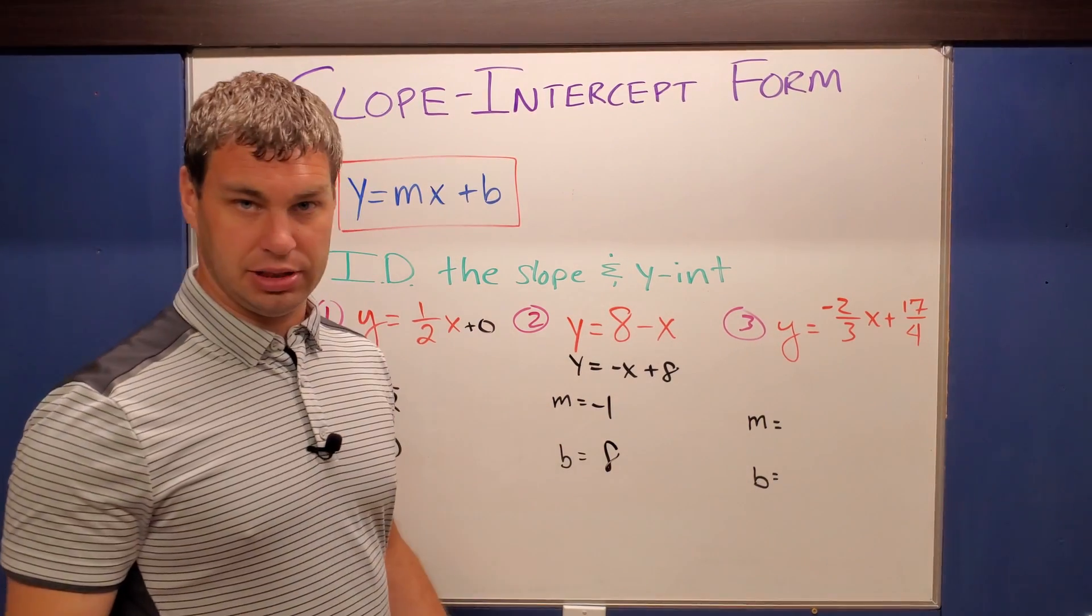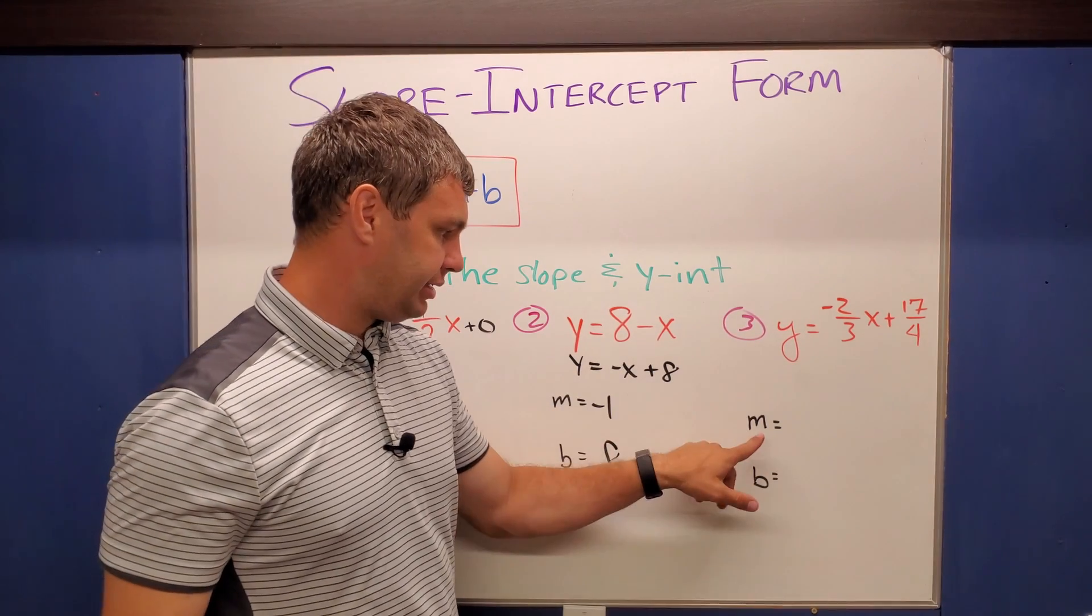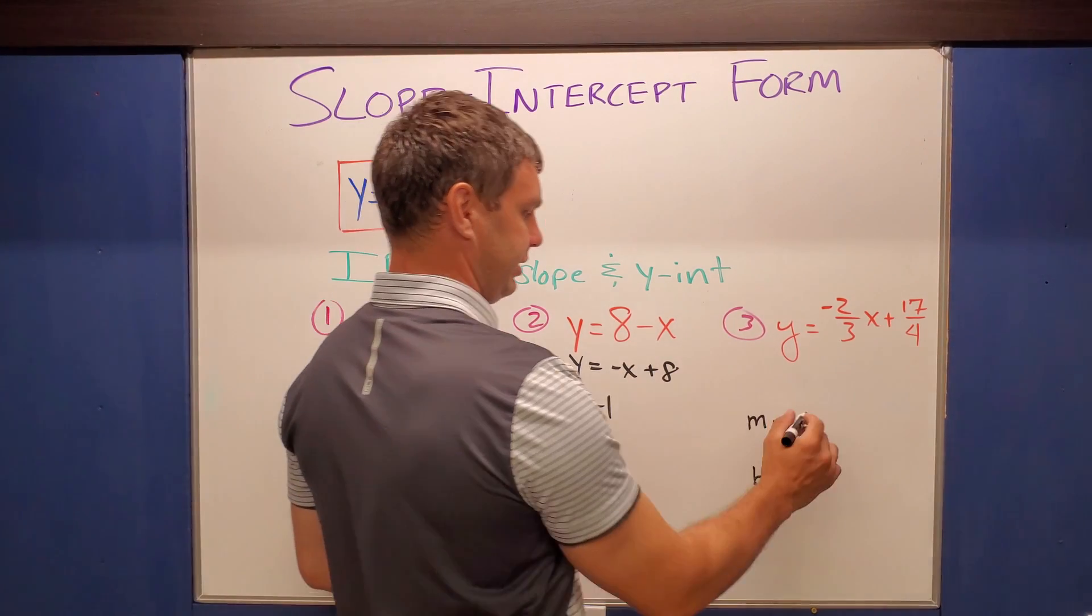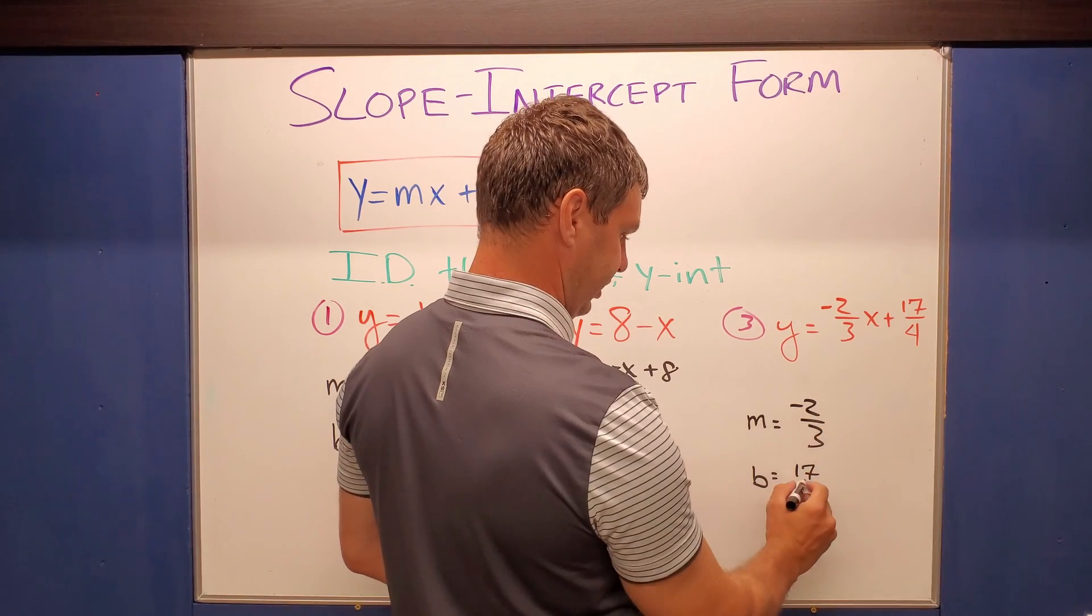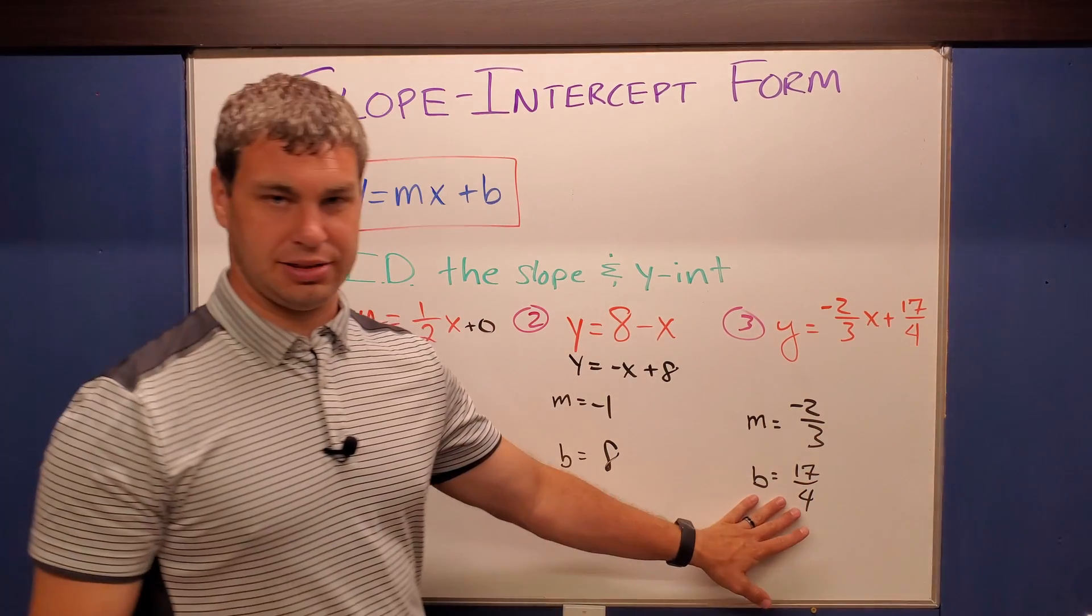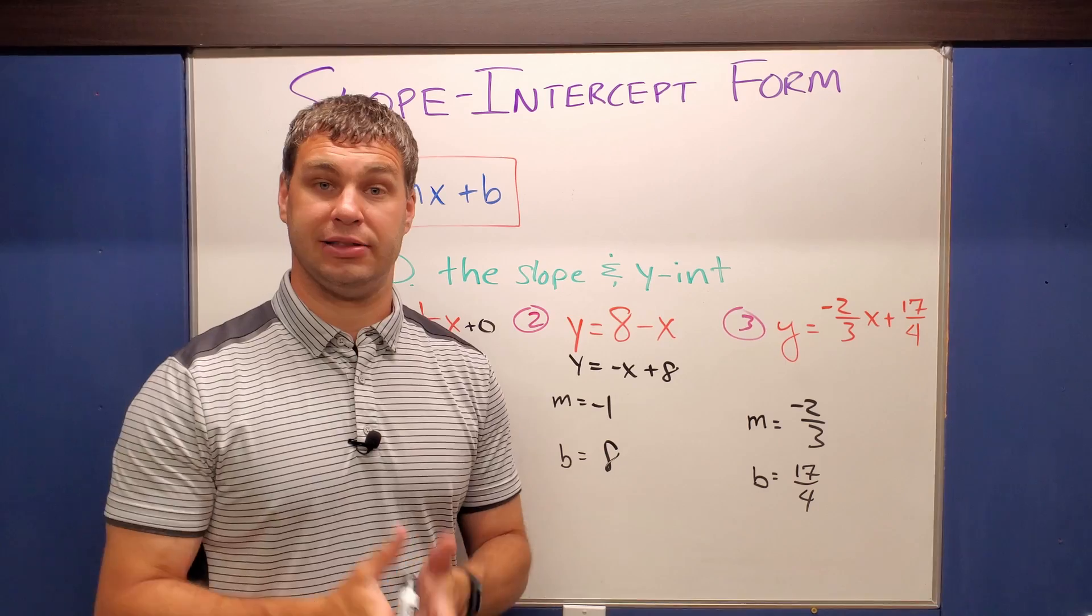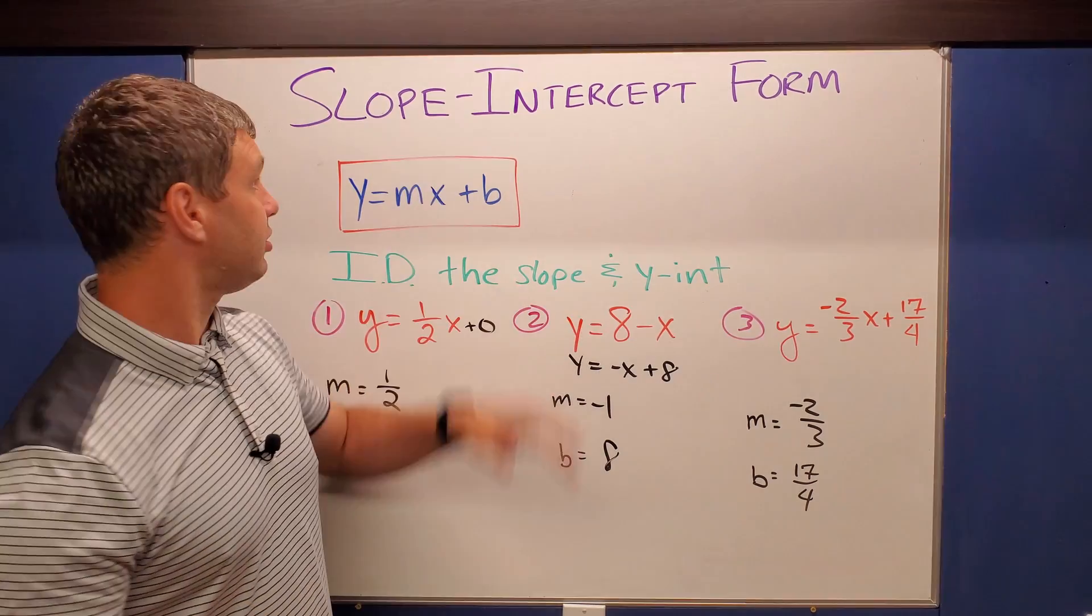Okay, the last one's probably the most simple even though it looks complicated with those fractions, but our slope is the number right in front of our x, negative 2/3, and our b is going to be 17/4 because it's plus 17/4. Alright, even though they're fractions that's totally fine. You can have that as those different numbers in slope-intercept form.